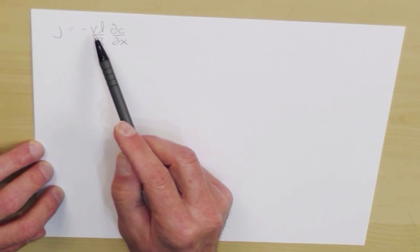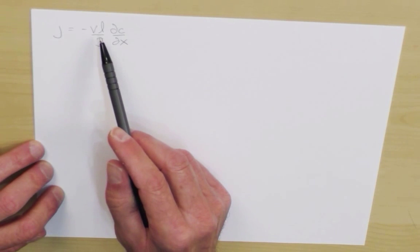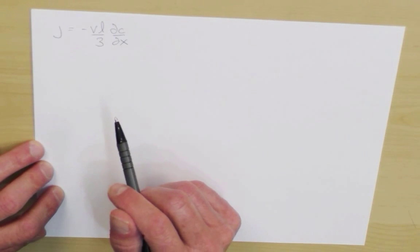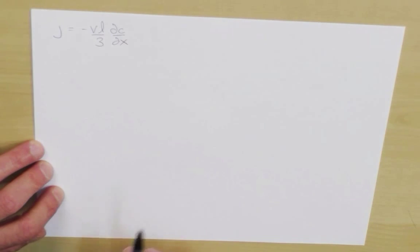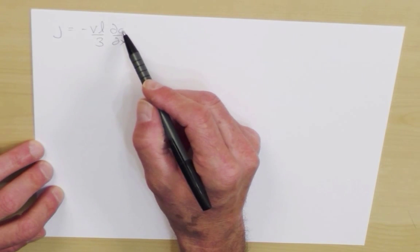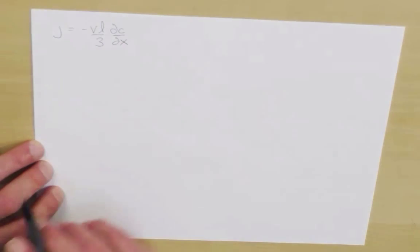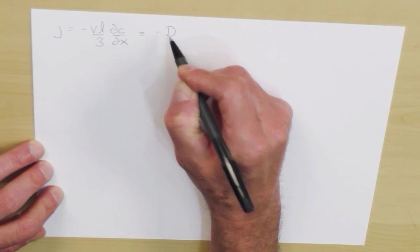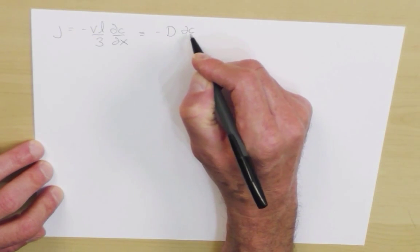In this formula, V is a typical thermal velocity of molecules, L is the mean free path, the number 3 is something you can ignore because this is all very rough calculation and all coefficients of order 1 you should just not treat seriously. And this is the concentration gradient, the derivative of the concentration with respect to x. And this is what we define as minus the diffusion coefficient dc by dx.